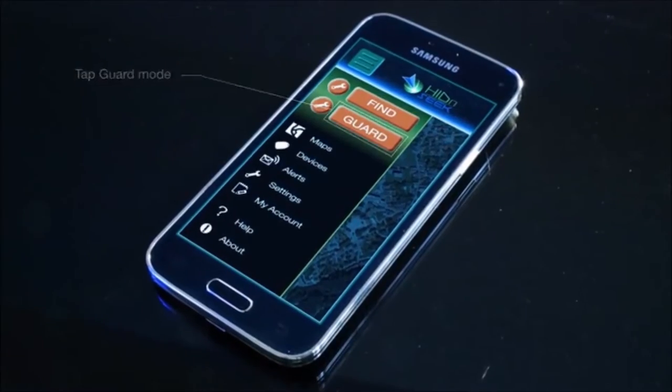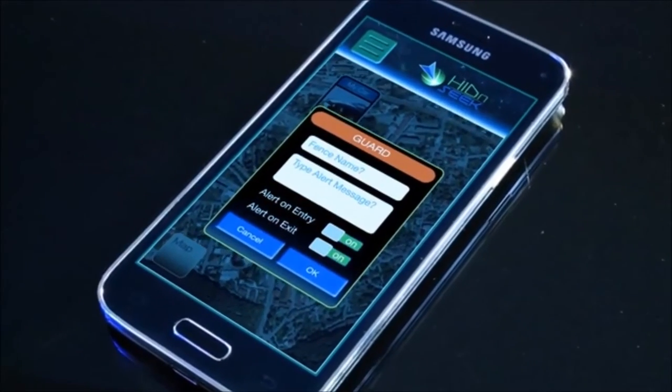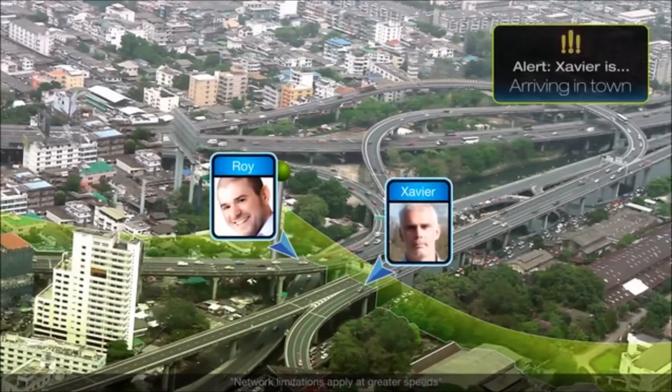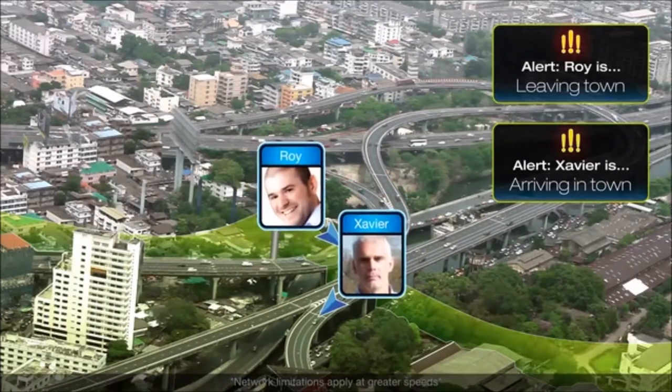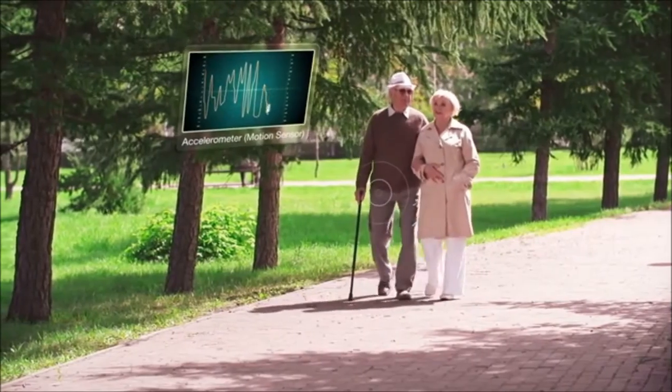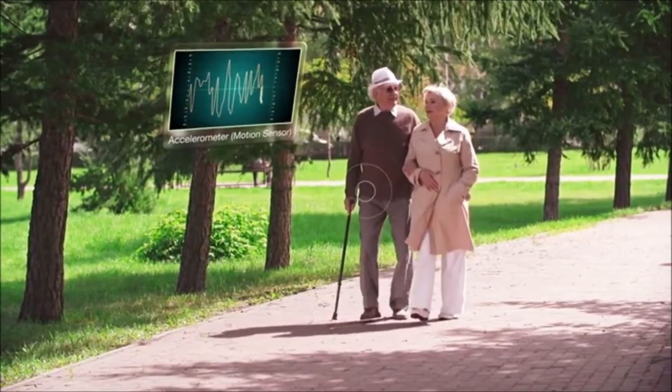Select Guard mode to draw a perimeter, and set up a custom alert message, for example, around your neighborhood or office area. Receive alerts if the tracker enters or leaves the area, or both. Also, activate the Bodyguard feature, and receive alerts if your loved one remains motionless beyond your chosen period.